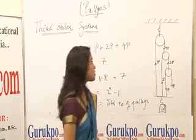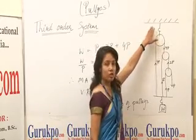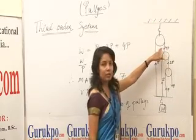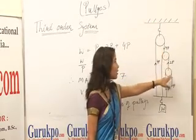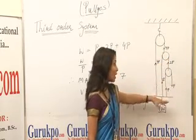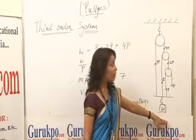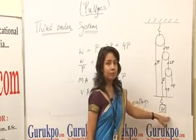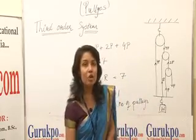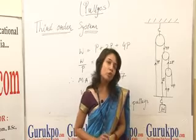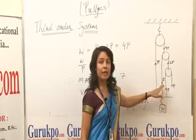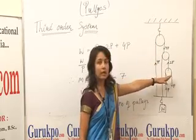In the third order system, one single pulley is attached to the ceiling. The second pulley is attached to that first pulley, and the third is attached to that second movable pulley. All three are connected to a rigid base where the weight is connected. In the previous two orders, the weight was connected to a single pulley, but here the weight is connected to the rigid base, and from that rigid base the three pulleys are connected.